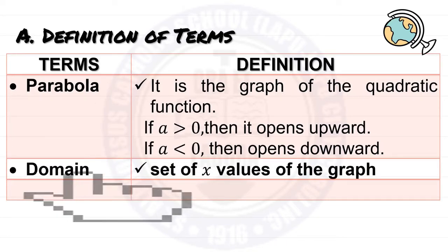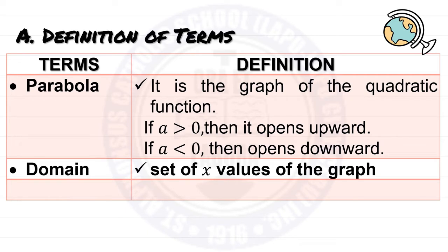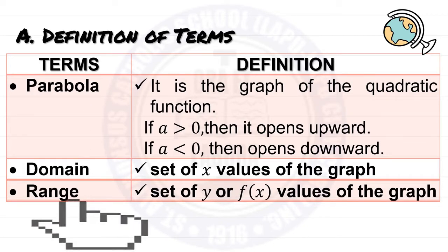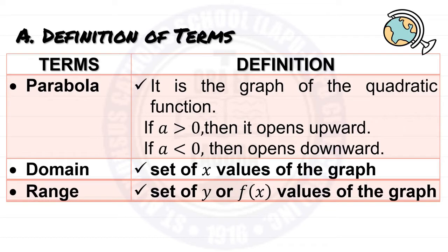Second term: domain. Domain represents the set of x values of the graph. Range is the set of y or f(x) values of the graph.